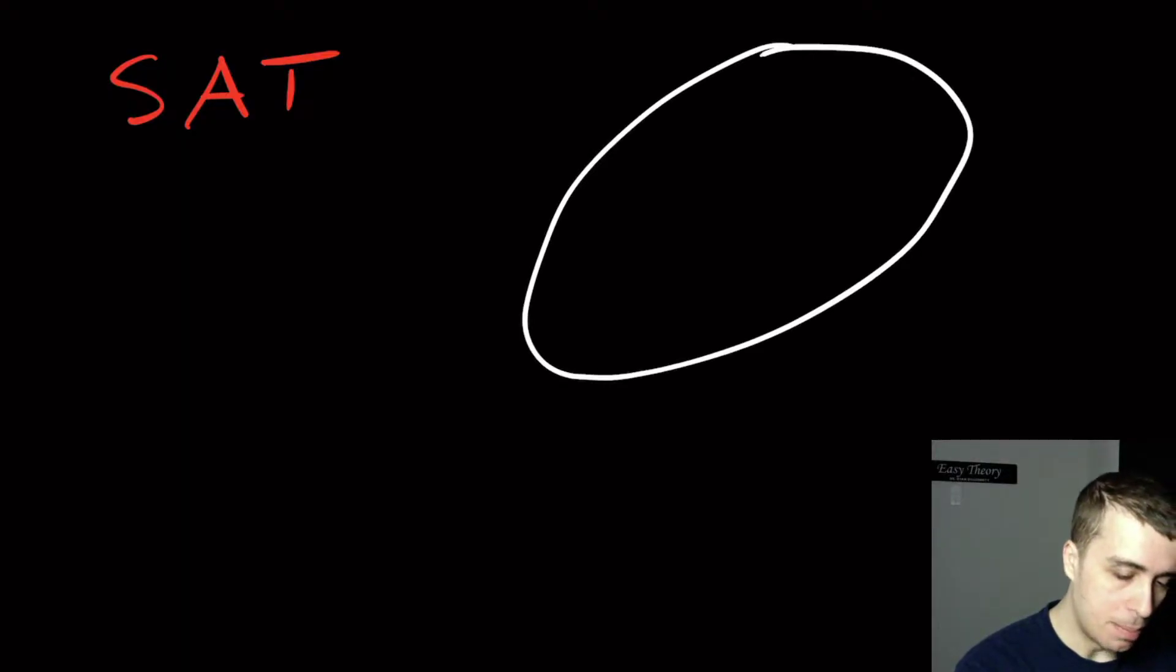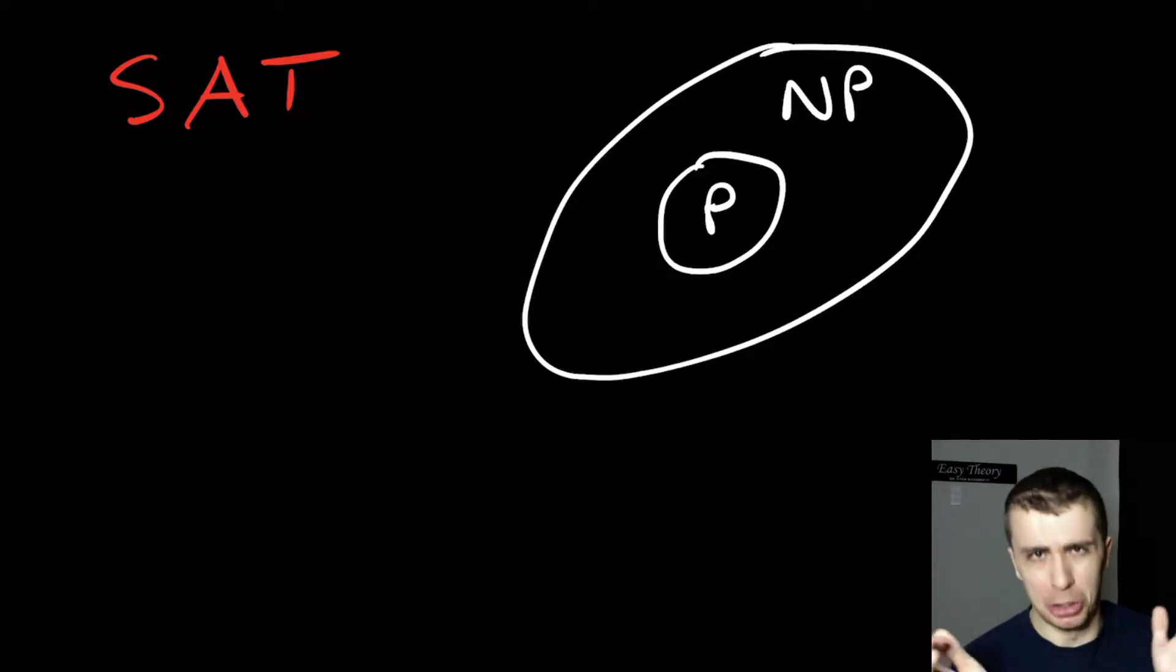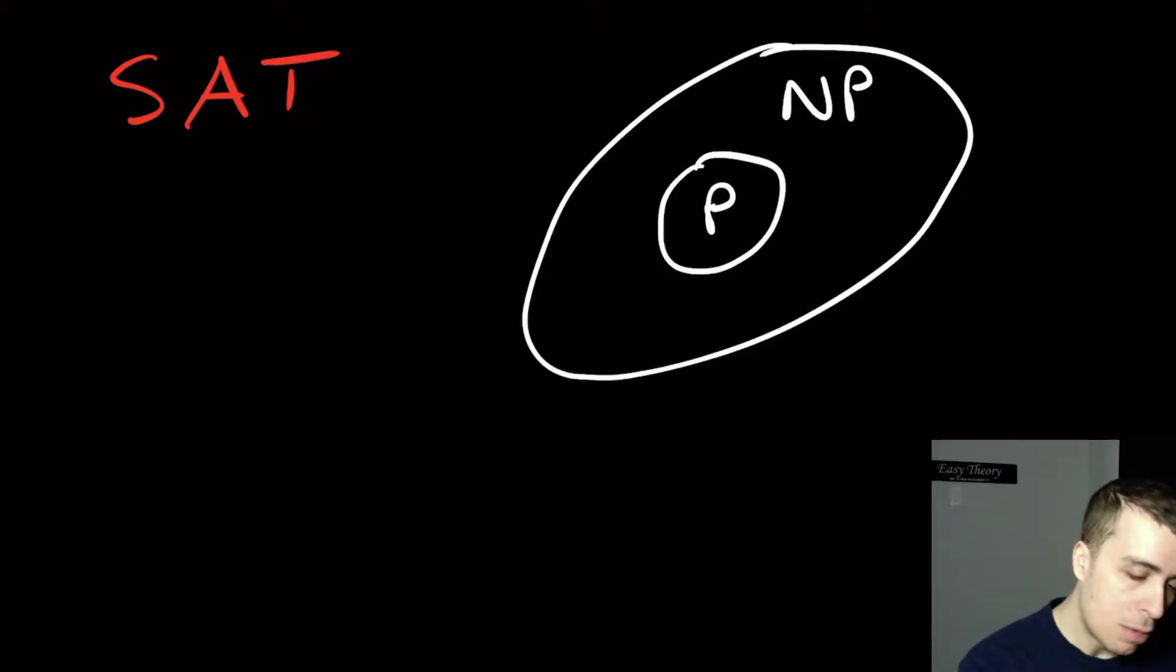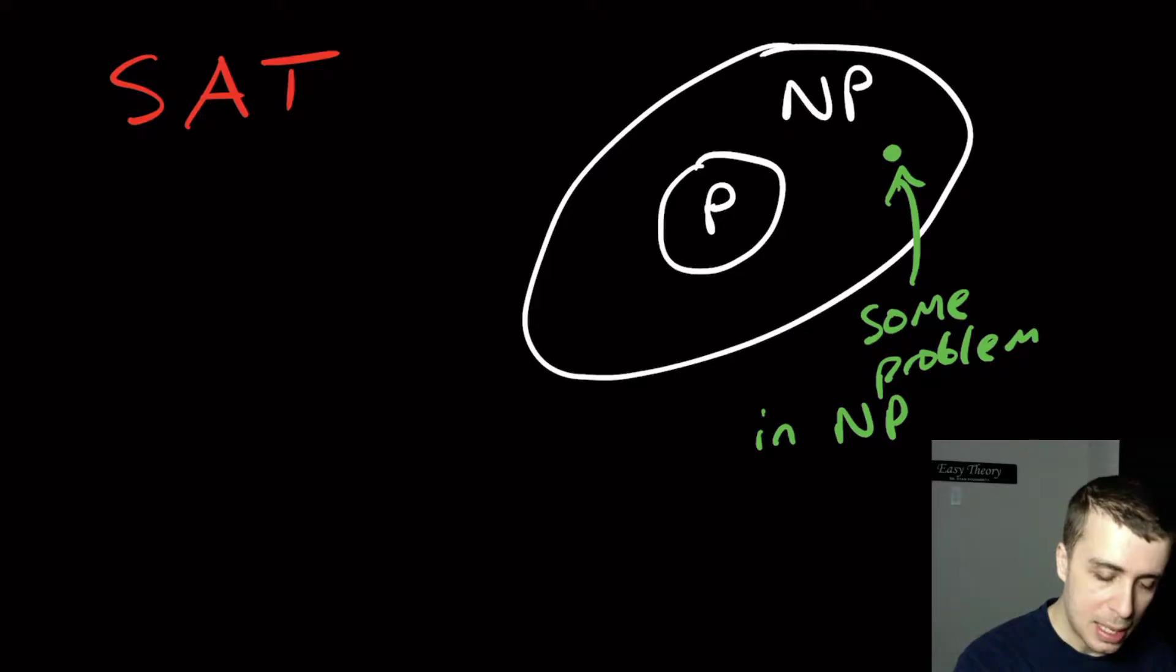We have this pairing of P and NP where P is a subset of NP. I don't know if this is really what the world is like, but let's just assume that it is. Then what we would want to do is find an example of some problem right here. So this is some problem in NP minus P.